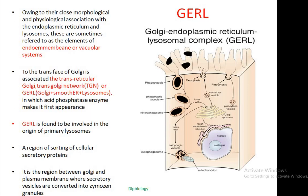GERL also acts as a region for sorting of cellular secretory proteins. It is the region between the Golgi and plasma membrane where secretory vesicles are converted into zymogens. The GERL plays a great role in the processing, packaging, and input and output of important molecules of the cell.